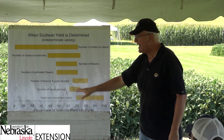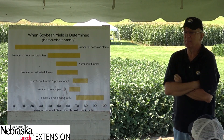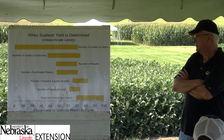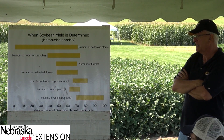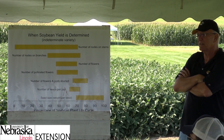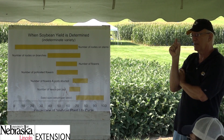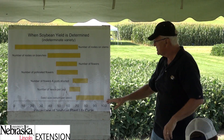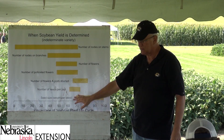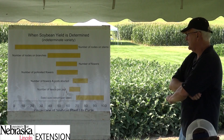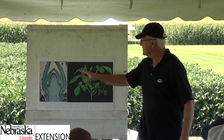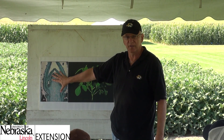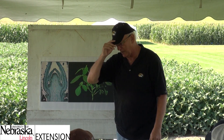Seeds per pod — I don't get too excited about that, but it does obviously affect seed number. You can have seeds that begin and then abort, so you can see little gaps, little misses, in pods if you look closely. And of course seed weight is what happens toward the end of the life cycle. Now this is across a longitudinal section of a dicot plant — not soybean, but it'll help us out here.